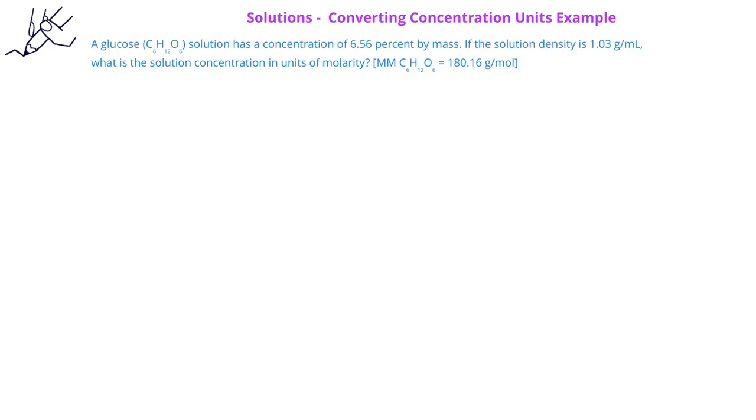Let's look at an example of converting one concentration unit into another concentration unit. In this problem, we're told that a particular glucose solution has a concentration of 6.56 mass percent. We're asked to calculate the concentration of this solution in molarity, and we're also given that the density of the solution is 1.03 grams per milliliter. The molar mass of glucose is given as 180.16 grams per mole.